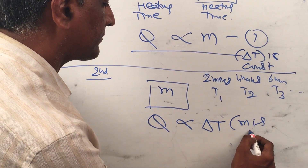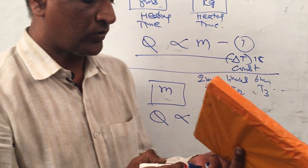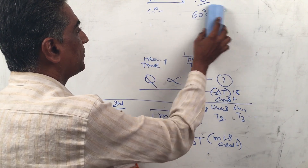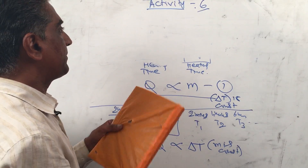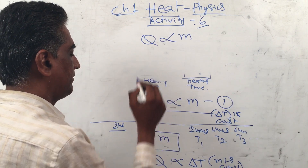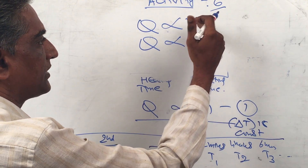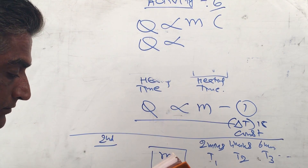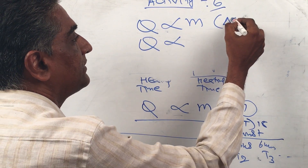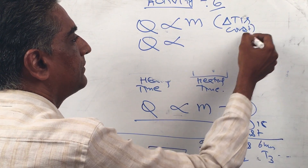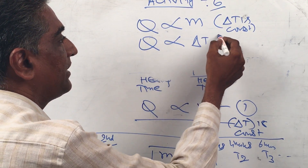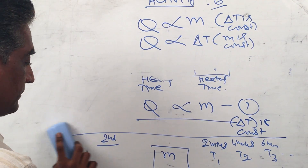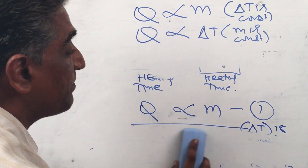Now let us put these two equations together. We got: Q is directly proportional to m (when delta T is constant, i.e., rising to 60 degrees), and Q is directly proportional to delta T (when m is constant). These are our two key relationships.